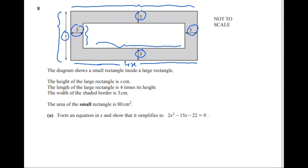The area of the small rectangle is 80 centimeters square. Form an equation in x and show that it simplifies to 2x squared minus 15x minus 20 is equal to 0.